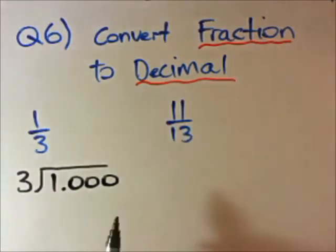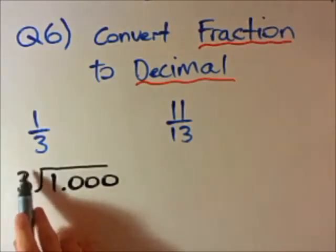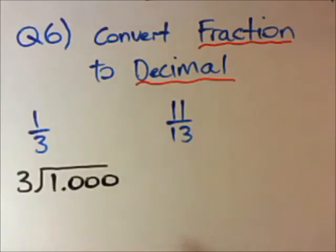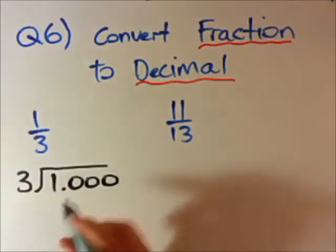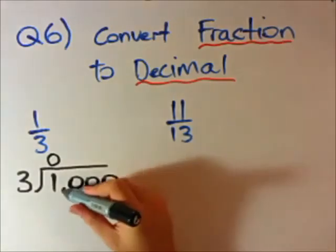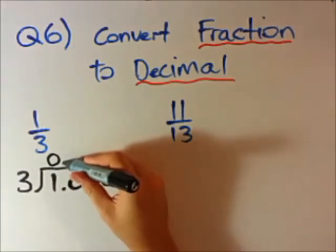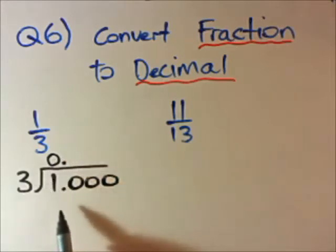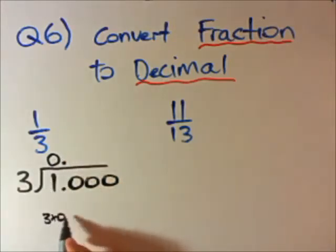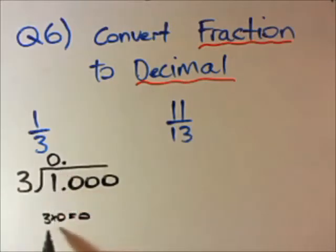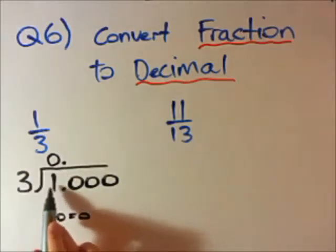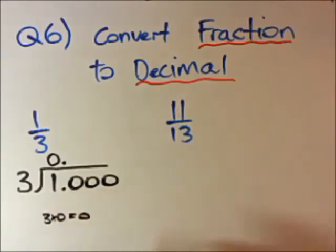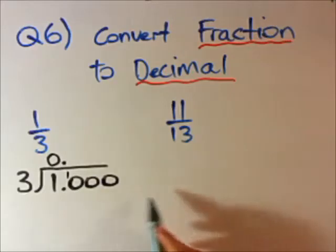This is the process — you might have learnt this last year. How many times does 3 go into 1? Well, 3 doesn't go into 1 because 3 is bigger than 1, so it goes in 0 times. You have to put the decimal point above where it was. 3 times 0 is 0, but we wanted to get to 1, so what's the remainder? We're 1 short. So that remainder goes up here, because we need it for the numbers after the decimal point.